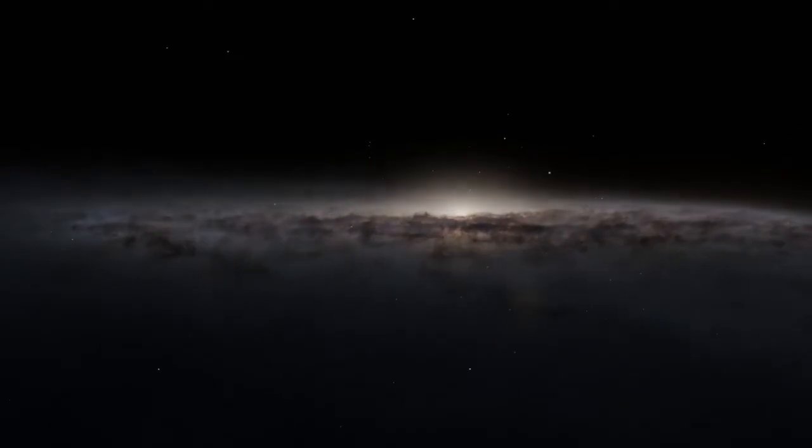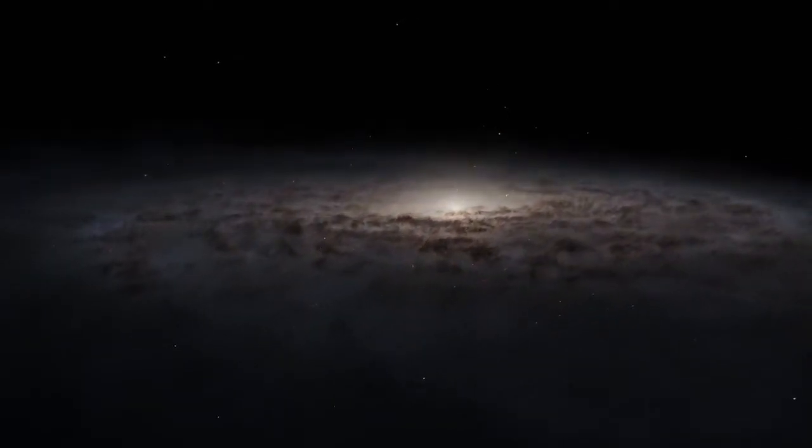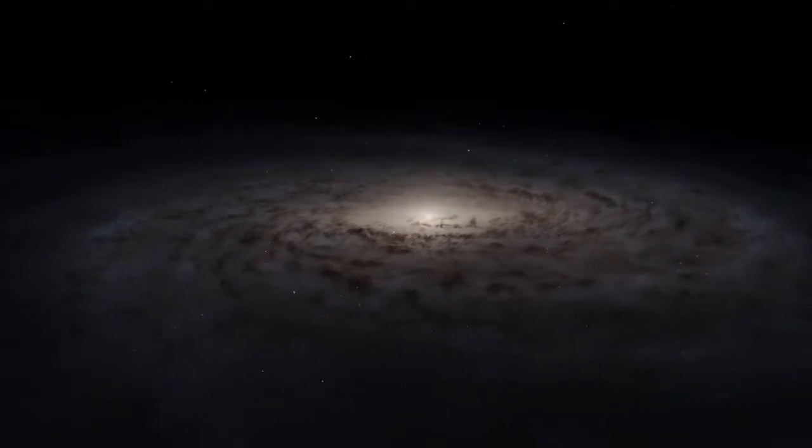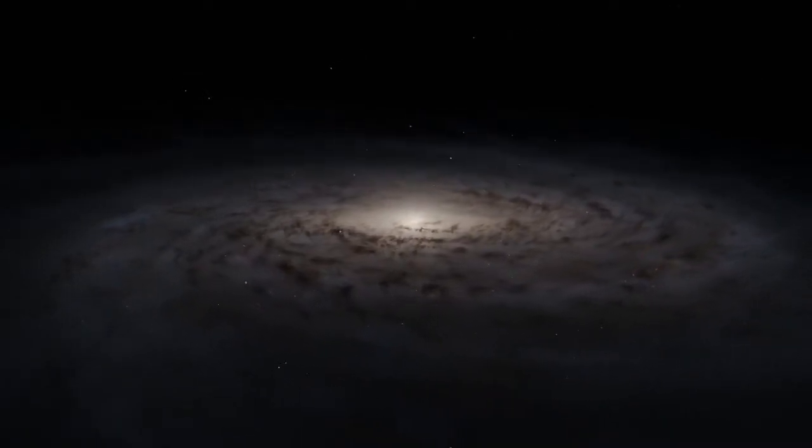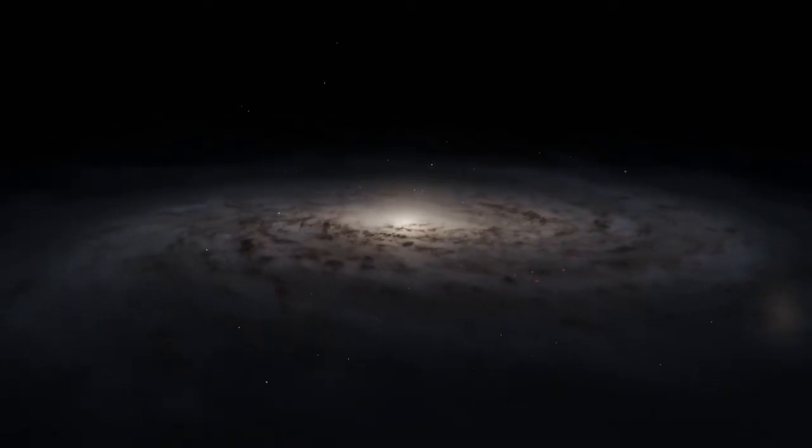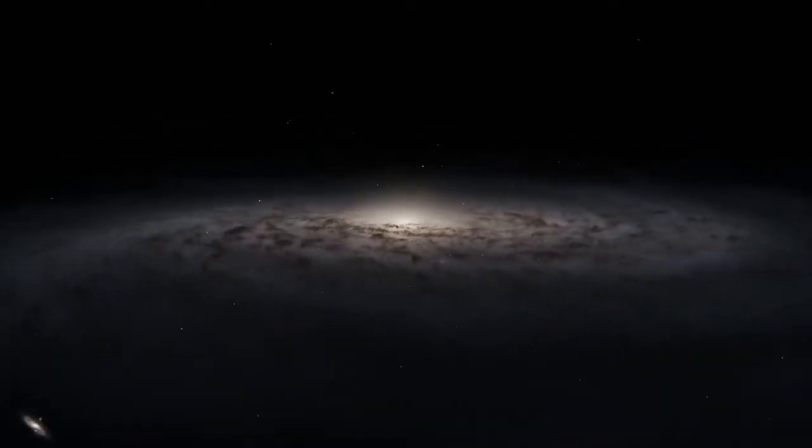When we look out at right angles to our galaxy's disk, we see relatively few stars. But if we look through the disk, we see many more, though in some areas they are obscured by dust. That view through our galaxy's stellar disk is what we see as the Milky Way.